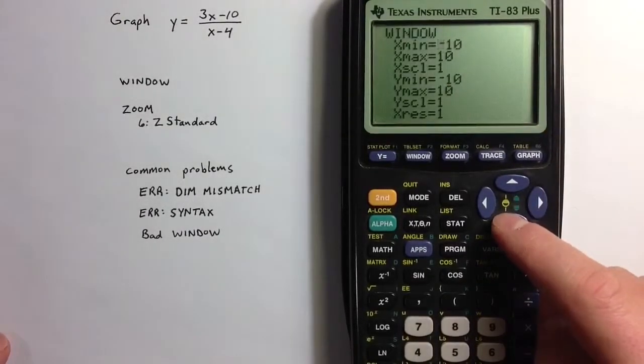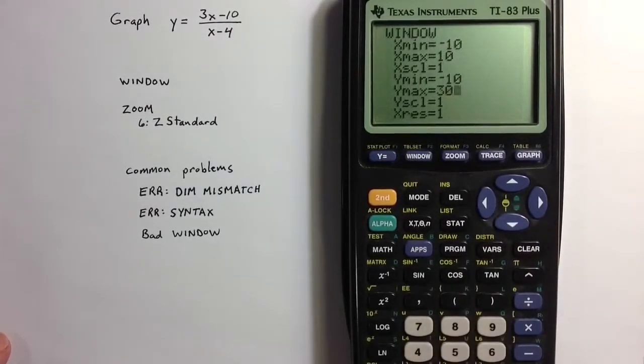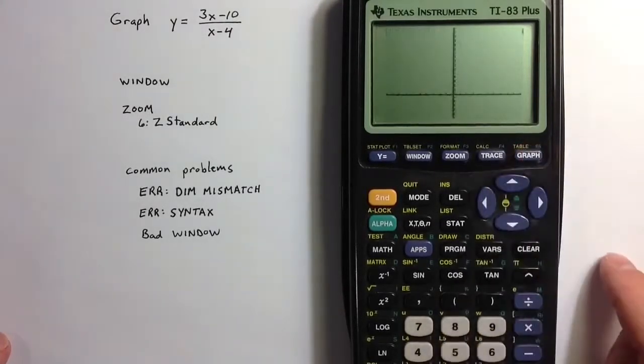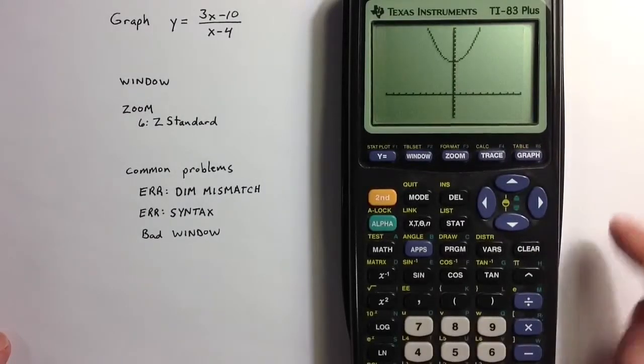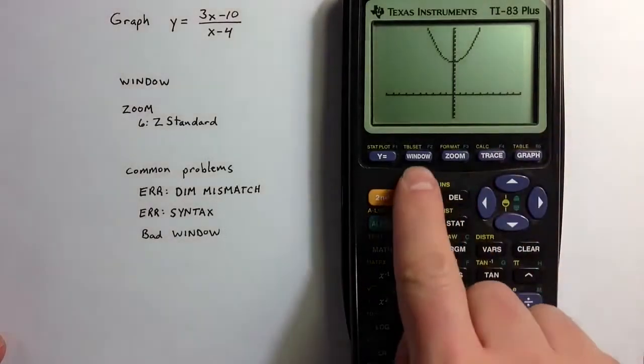We can adjust the y maximum maybe to 30, and then we can see at least part of a much better graph than we saw before.